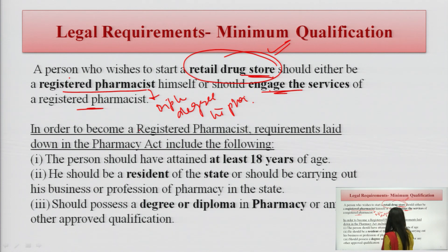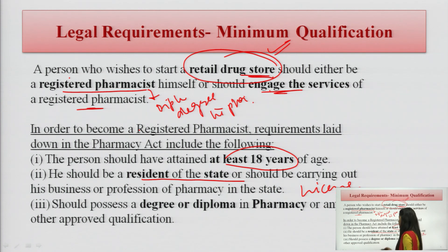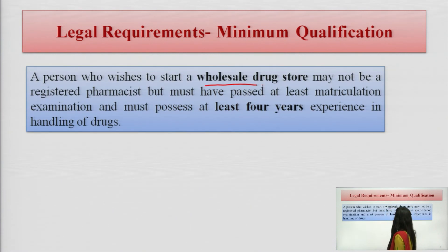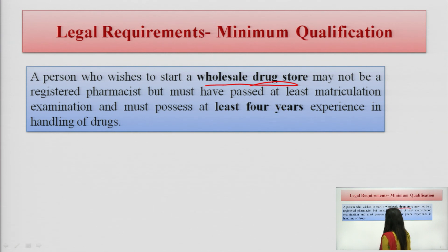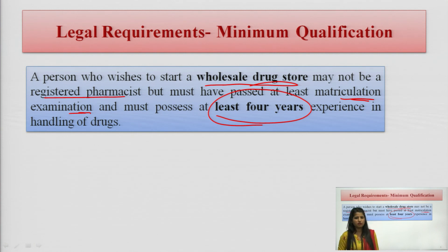For a registered pharmacist, the qualification criteria are: they should be at least 18 years of age, they should be a resident of that state because the state is going to give the license, and they should possess a degree or diploma in pharmacy. For the wholesale drug store, it is not mandatory that the person is a registered pharmacist, but at least they should have passed the matriculation examination or have at least 4 years of experience in handling drugs.